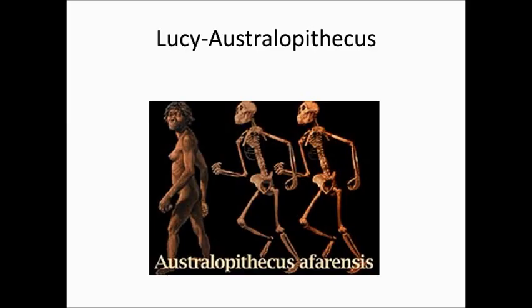So what did these earliest ancestors of humans look like? Well, the first one we're going to talk about is Lucy. Lucy's scientific name is Australopithecus. Where do you think Lucy came from? Many of you may have guessed Australia, but that would not be right. The correct answer is Africa — Eastern Africa to be specific. Lucy was an early primate of human origin, and the big difference between Lucy and an ape was Lucy's hip bones, which allowed her to walk upright. She was probably a little over three feet tall, with a very elongated jaw and a smaller cranium.